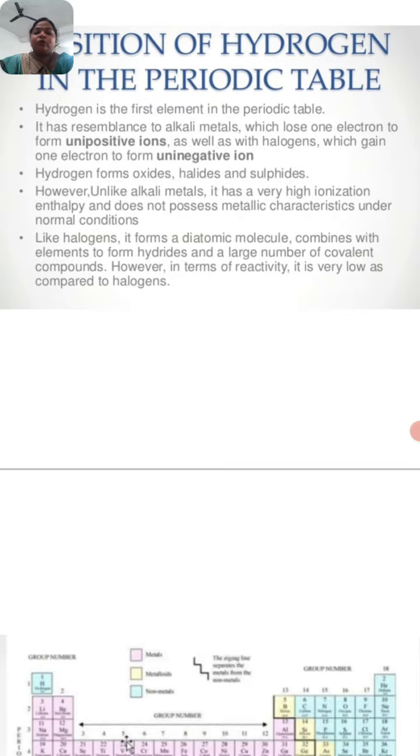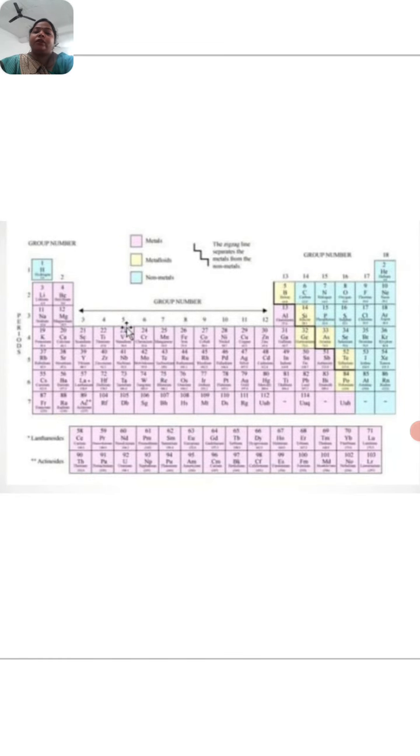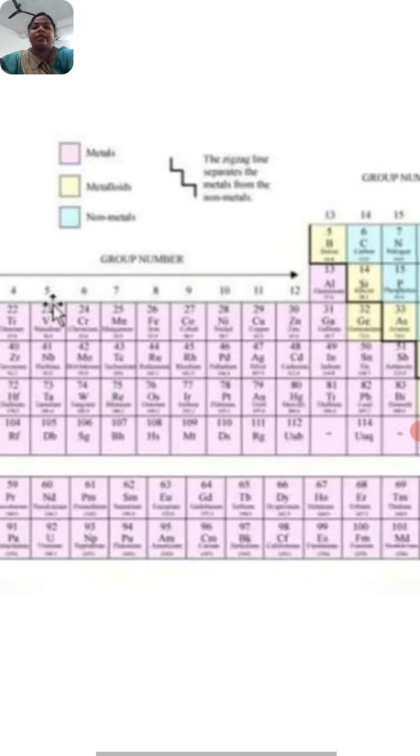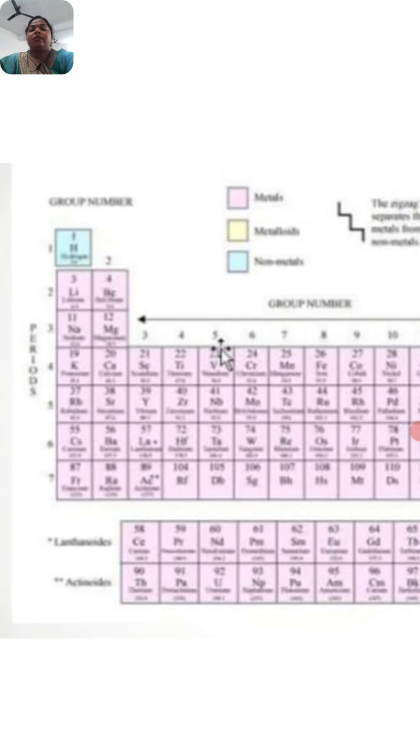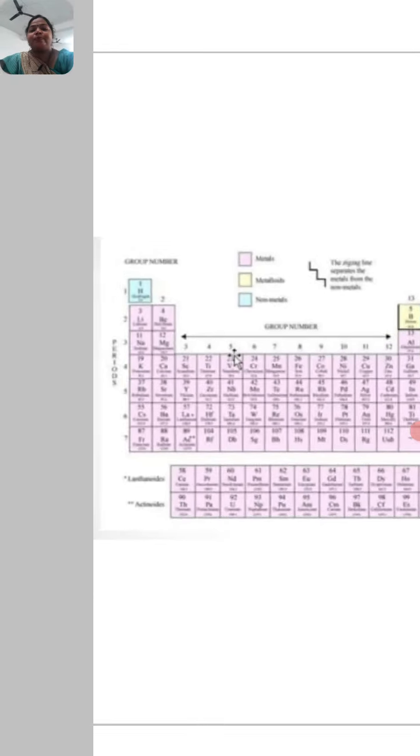Now, here is the position of the hydrogen in the periodic table. See, at the first position we have placed hydrogen.